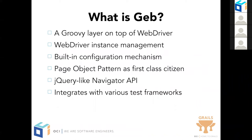Geb comes with WebDriver instance management, which means it will take care of opening the browser at the beginning of your tests and closing that browser when your tests are done and your test JVM is shut down. It has a built-in configuration mechanism implemented as a Groovy config script, which you might be familiar with from earlier versions of Grails. You can configure things like the base URL of the tested application. Probably the most important part of Geb is that the page object pattern is treated as a first-class citizen.